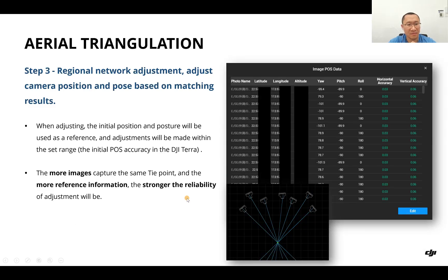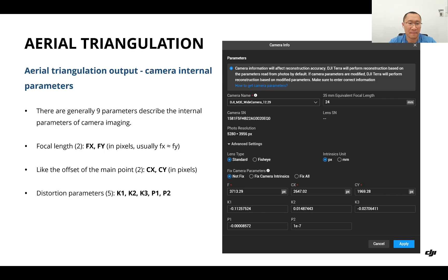When adjusting, the initial position and posture will be used as a reference, and adjustments will be made within the set range. For example, the initial pose accuracy in DJI Terra is listed as horizontally 3 cm and vertically 6 cm. The more images that capture the same tie point, the more reference information we get, so the stronger and more reliable the adjustments will be. As for aerial triangulation output, first it outputs the camera internal parameters. There are generally nine parameters describing the internal parameters of camera imaging. For example, two parameters represent focal length, two represent the offset of the main point, and five parameters represent distortion parameters.